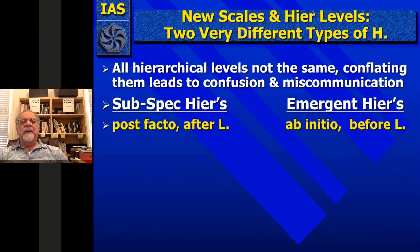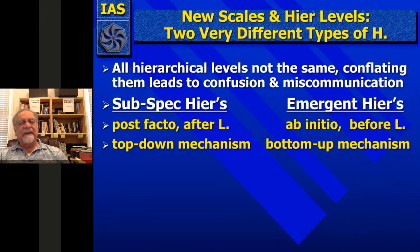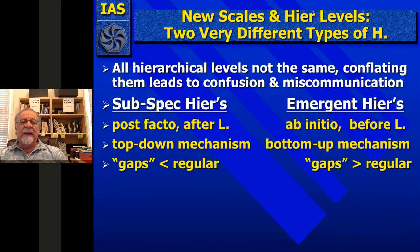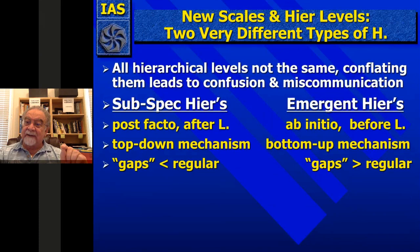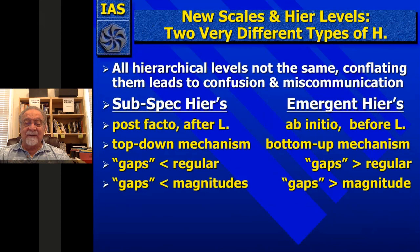Subspecialization is post facto — it's after the level has appeared — while emergent hierarchies are ab initio, before the level occurs. Subspecialization is a top-down mechanism: cells occur and then organelles specialize, or bodies occur and then organs change. Emergent hierarchies are bottom-up. The gaps are less regular in subspecialization because they depend on what's already established in the level, but the gaps are more regular, oddly enough, between scales. Gaps are lesser in magnitude within subspecialization hierarchies and greater in magnitude between scales.